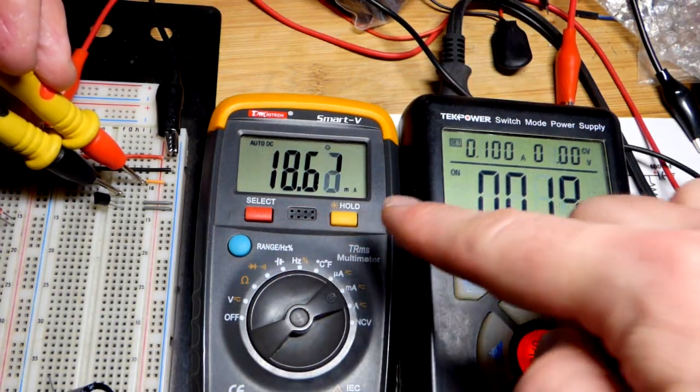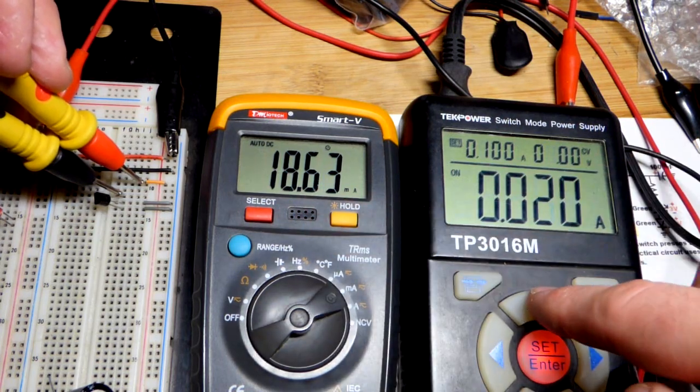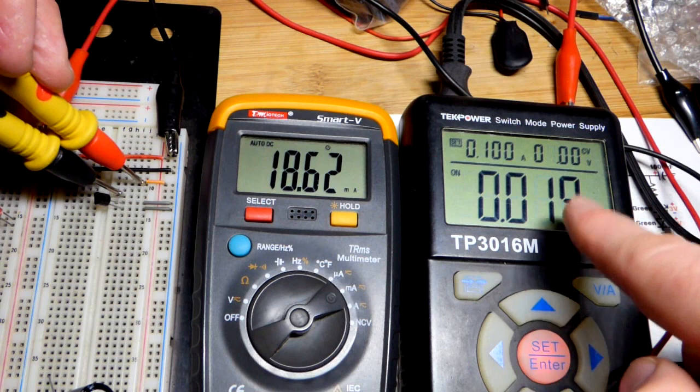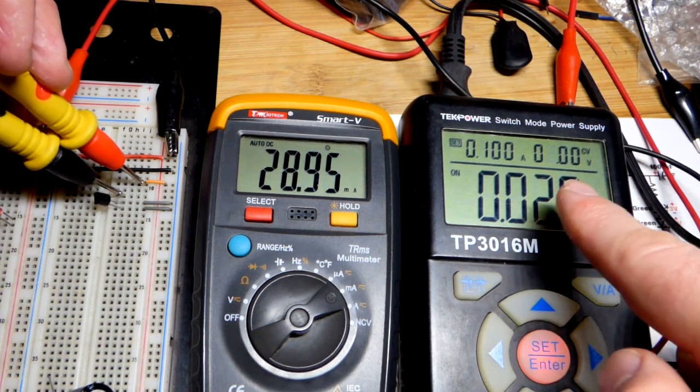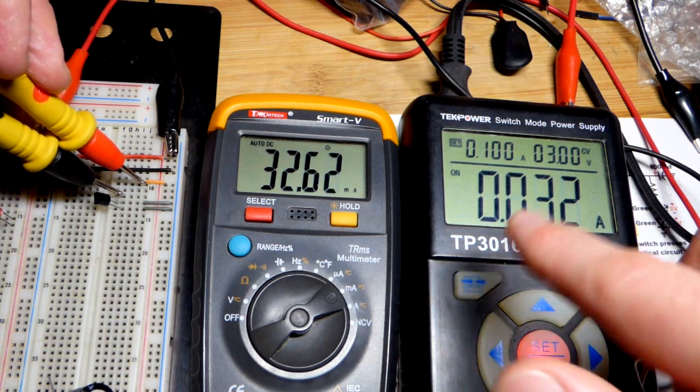So now I bridge that gap with the multimeter set to measure milliamps of current. This isn't the IDSS yet because if I raise the voltage, now there's more current. We just didn't have enough power to get to the IDSS.